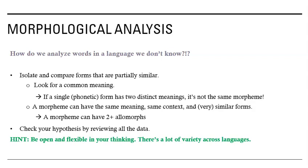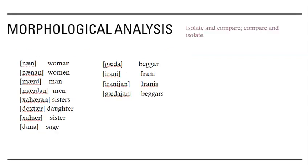There's a hint to be open and flexible in your thinking, because there's a lot of variety across languages. Okay, let's start with the first one. Here are some words in a particular language — this happens to be Farsi. We can see that we have the word in Farsi and then the English translation, so we're just going to look at these words and see if we can figure out what the morphemes are.